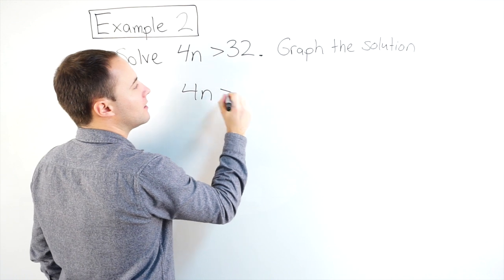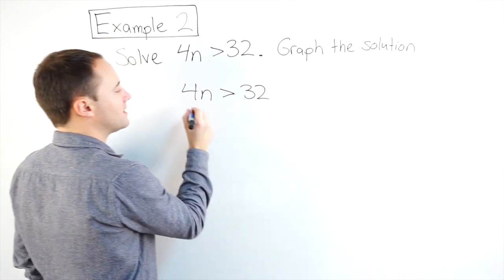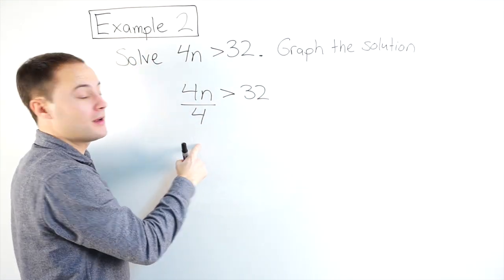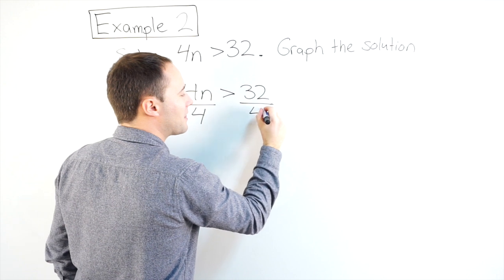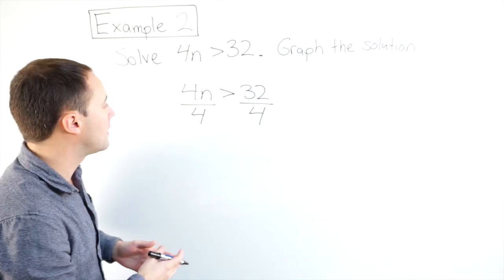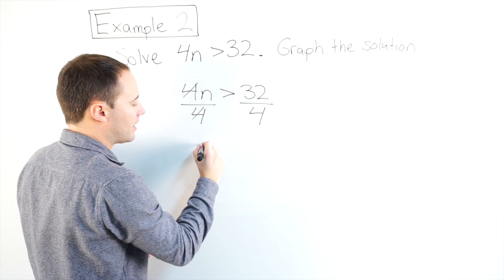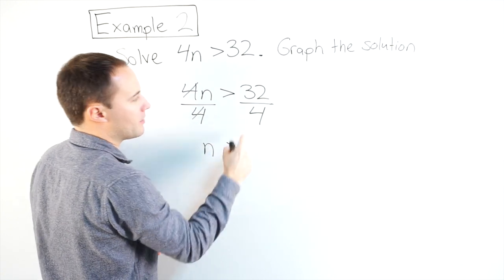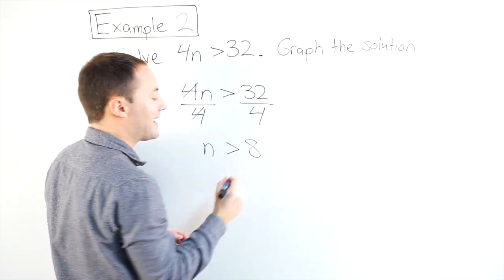So 4n is greater than 32, I'm going to divide this side by 4, which means I'm also going to divide that side by 4 to make sure the inequality stays true. Those get cancelled out, and I get n is greater than 32 divided by 4 is 8.